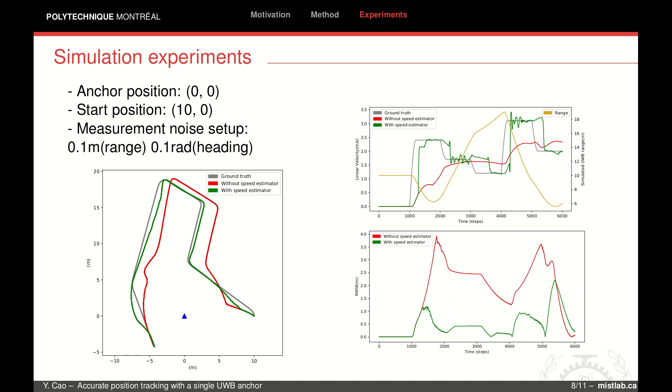However, the EKF without speed estimator can only catch up with the rough trend of the speed. The bottom right figure is a comparison in terms of root mean square error. The error of our algorithm drops rapidly when the correct speed estimation is available.